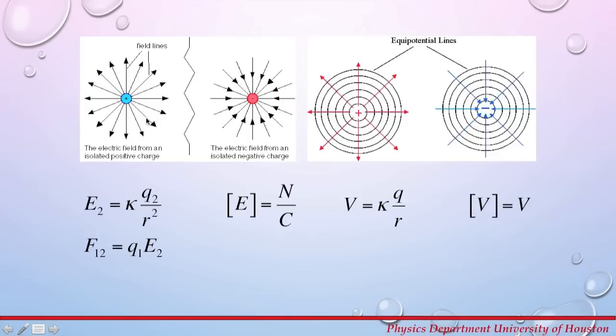The electric field will be produced around each charge as well as the electric potential. Next week you will do a whole experiment on tracing these equipotential lines and electric field lines. The magnitude of the electric field produced by a charge q2 that charge q1 would feel is given by this equation.